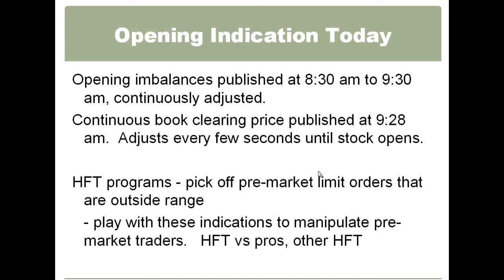Also don't just believe that because a stock says it's going to open at 92.50 that it is. Don't go running and picking off a 92.20 J&J buy order 50 cents above the market just because you think it's opening 30 cents higher. Those opening indication prices change a lot — sometimes in the last second, or even after 9:30 until the stock opens that price will continuously adjust. So that information is difficult for us to use too. The big thing is that even having pre-market limit orders out there risks getting picked off.